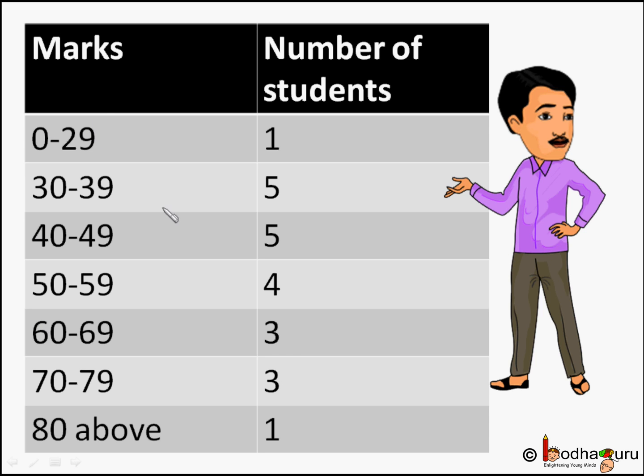So to summarize: when the amount of data is huge, we often condense the data into groups called classes. This is called a grouped frequency distribution table. This way we can represent data in a way which makes more sense. How can we represent these classes using a graph? We will discuss that in our further lessons.